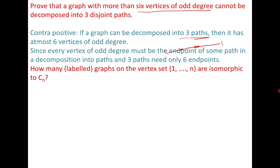The next question asks: how many labeled graphs on vertex set 1 to n are isomorphic to Cn? Here Cn is a cycle of length n.